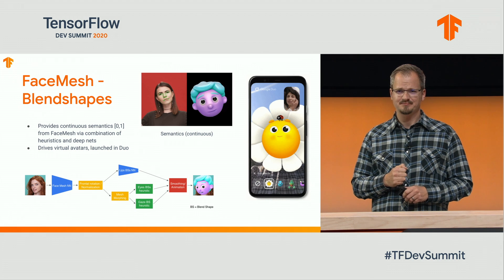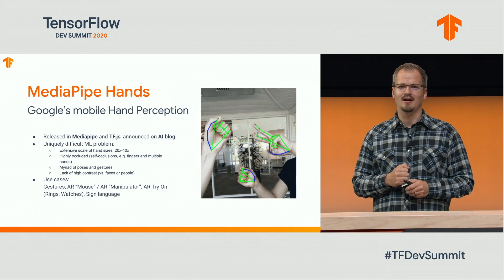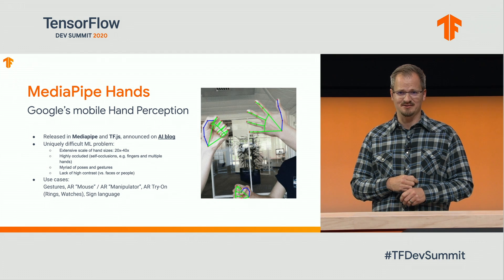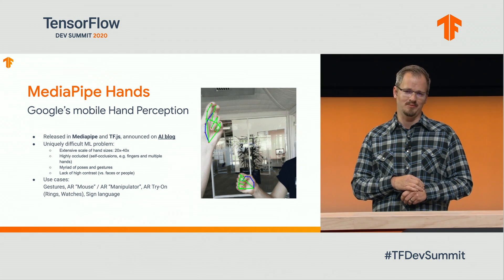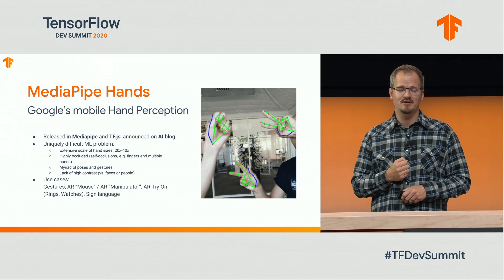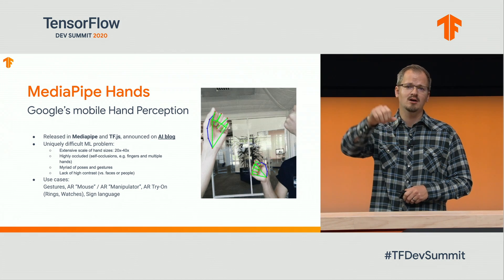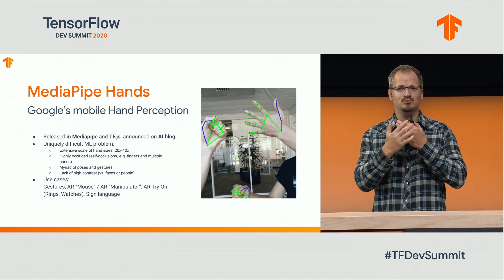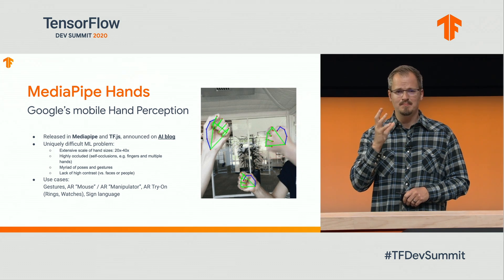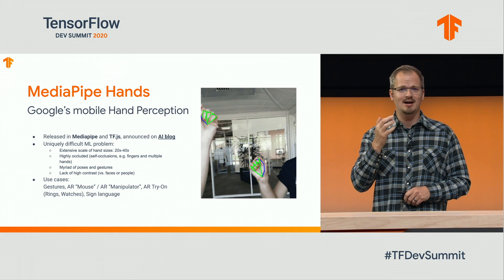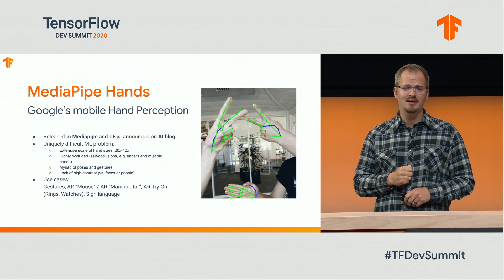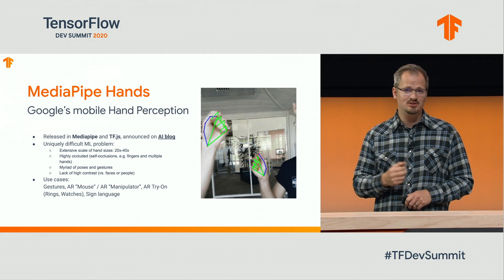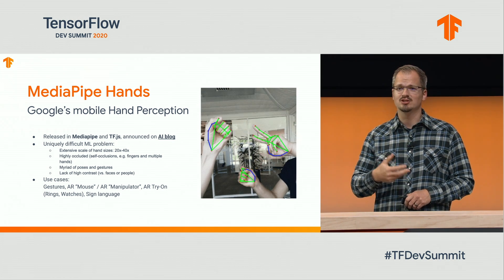Let's move on to hand meshes. We have MediaPipe Hands, released in MediaPipe as well as TF.js, available to developers. Hand perception is a uniquely difficult problem. You have to cover a huge scale range, from cases close to the camera to far away. Hands tend to be heavily occluded by themselves — for example, fingers occluding each other. They have a myriad of poses, much more difficult than the gestures a face can make. And they have very low contrast in comparison to faces, particularly when occluding a face. But if you can solve it, there are very interesting use cases from gesture recognition to sign language.